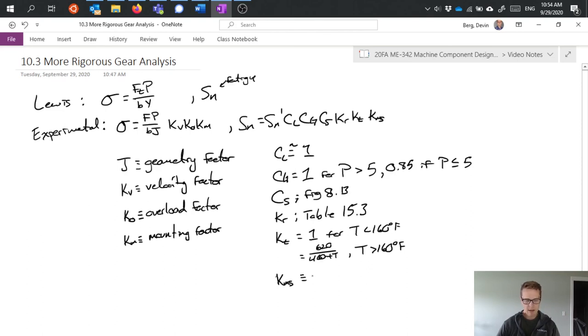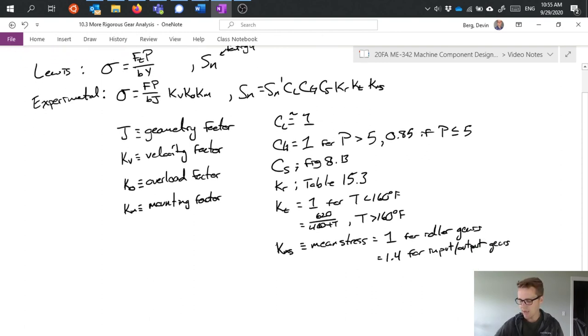And finally, we have a mean stress factor. So, mean stress allows us to take into account what type of gear we're talking about. So, it's equal to 1 for idler gears, and equal to 1.4 for input or output gears. So, what this is doing, what this mean stress factor is doing, is basically taking into account how that gear tooth is loaded.